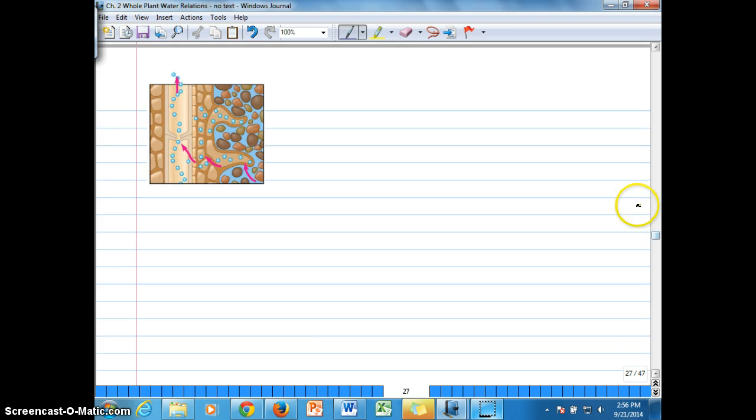And then as we saw, that water column continues all the way to the point where it's in the soil. And cohesion even pulls water in from the soil. Cohesion of water column can even be strong enough, those negative pressures can be strong enough to draw water in from soil.